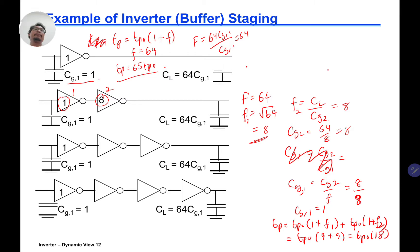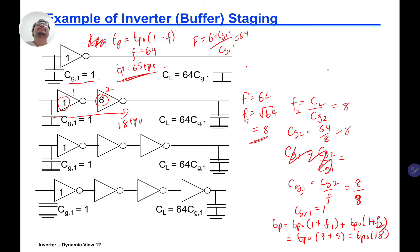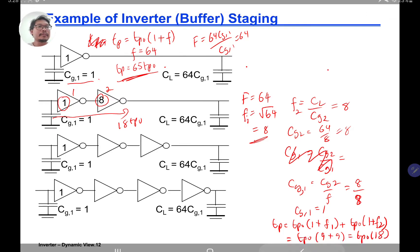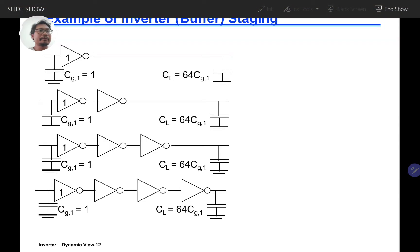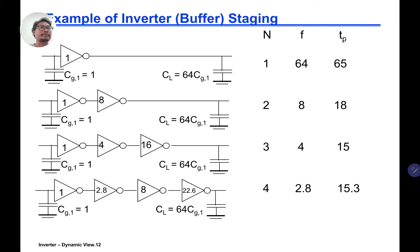The total delay for two inverters is 18 TP0, compared to 65 TP0 for one inverter. So if you use two inverters with correct sizing, you get much less delay — 18 TP0 versus 65 TP0. The solution confirms we have a delay of 18 using two inverters and a delay of 65 using one inverter. Obviously, using two inverters is faster.